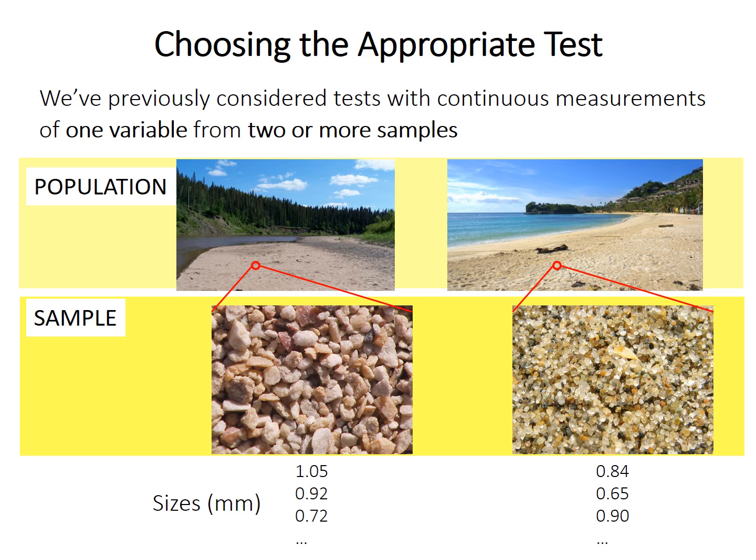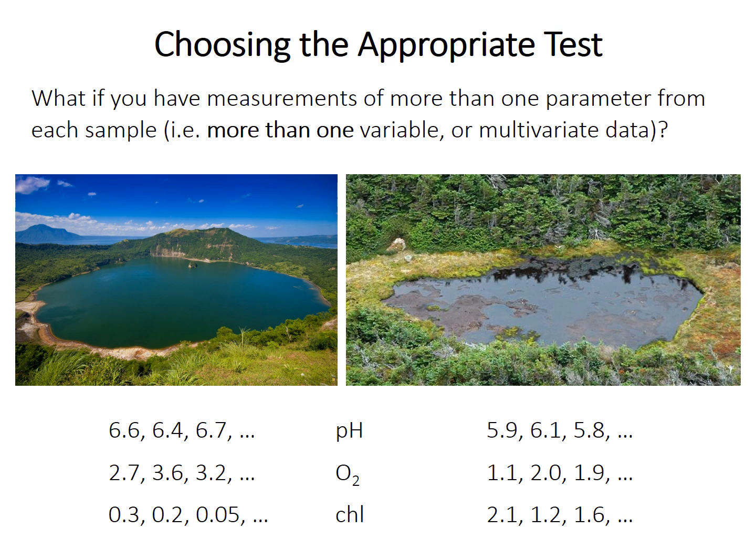So far in this class, you've been using tests with measurements of just one variable. For example, you're comparing the size of sand grains with one measurement of the maximum dimension. But what if you have measurements of more than one thing, like pH, oxygen, and chlorophyll from two different lakes? The lakes are your samples, but you have more than one variable, and you want to compare all these variables at the same time. This is called multivariate data.